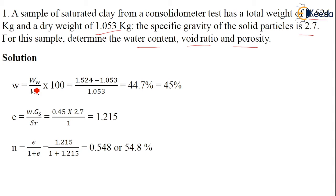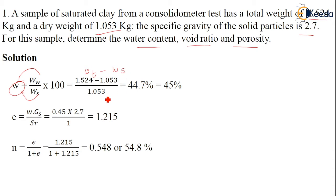Water content is denoted by small letter w and is equal to the weight of water divided by the weight of solids, always expressed as a percentage — hence multiplied by 100. The weight of water is not given directly, so it is calculated as total weight Wt minus weight of solids Ws, divided by Ws. Substituting the values, the calculated value is about 44.7%, which rounds to approximately 45%.